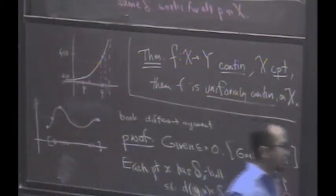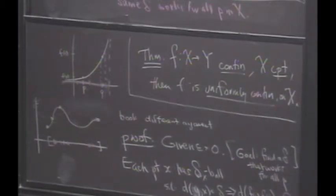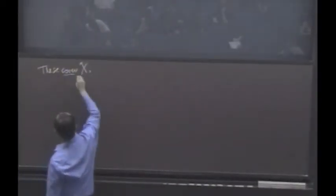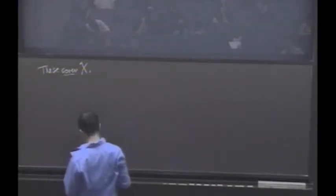We'll see in a second what that should be. I'm trying to motivate this argument for you. Okay, so the delta X balls cover, these cover X. So there is a finite subcover.